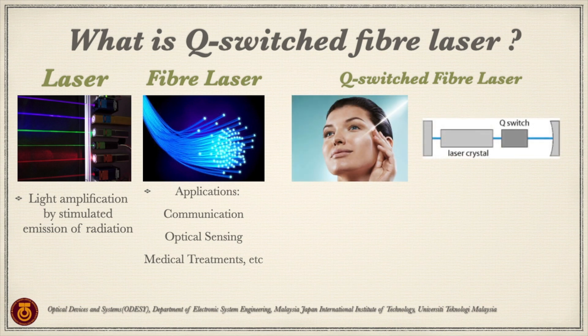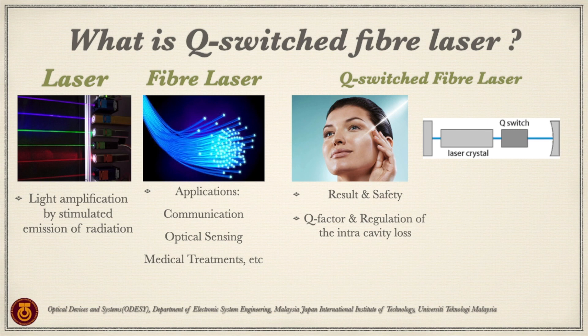The concerns of Q-switch fiber laser application are based on two perspectives: the result and the safety of the laser treatment. The factors affecting Q-switch fiber laser are the Q-factor and the regulation of the intra-cavity loss, generating short but energetic optical pulses which are safe for the human dermis layer and provide great results in fading and removing pigments. The Q-switch fiber laser can be achieved by active or passive techniques.